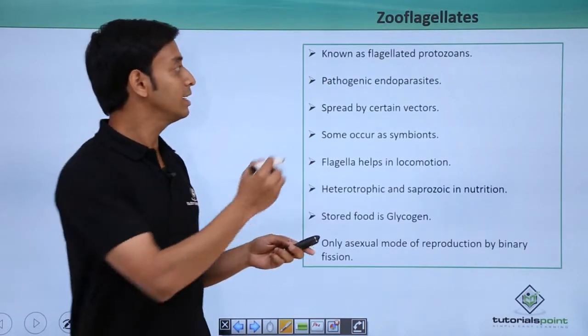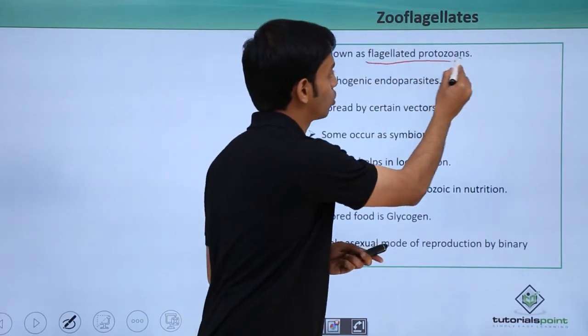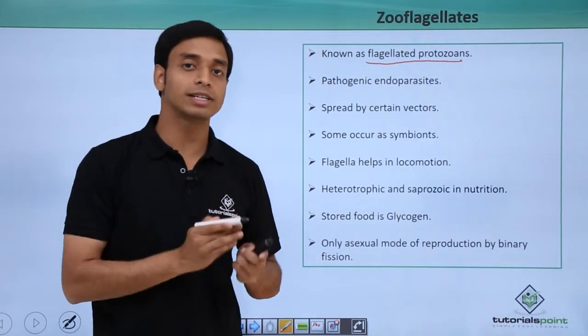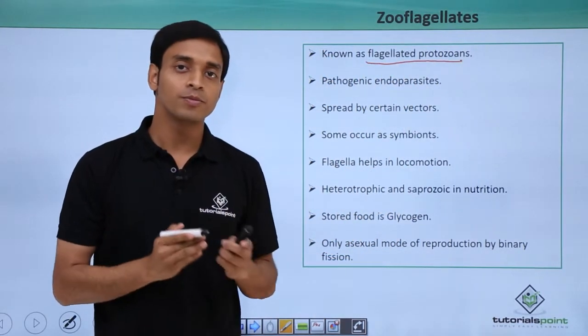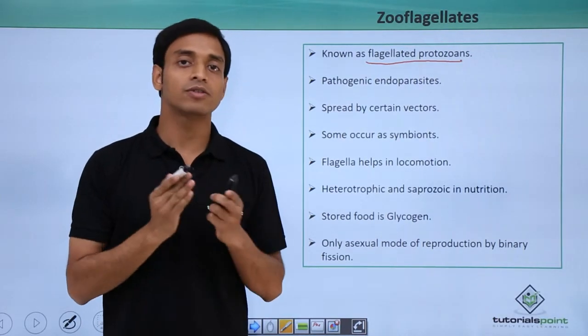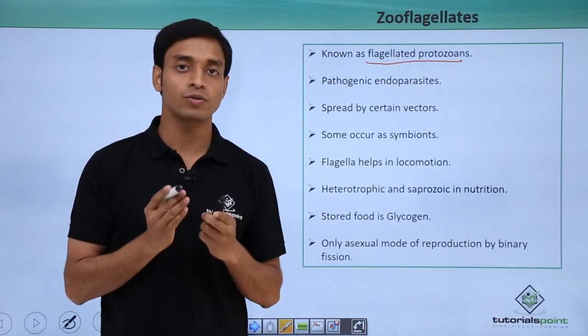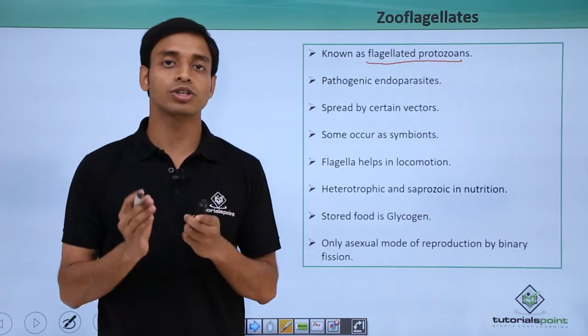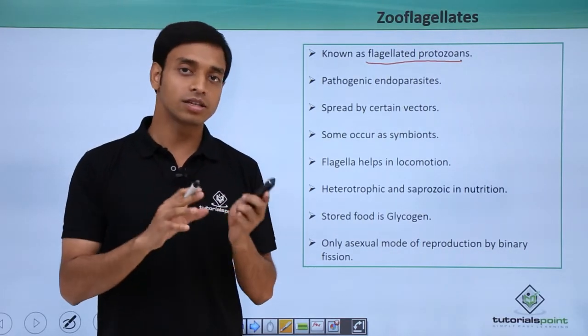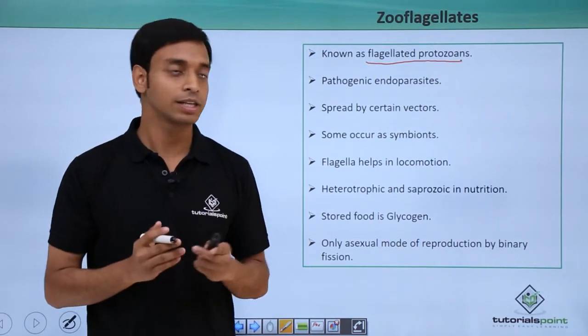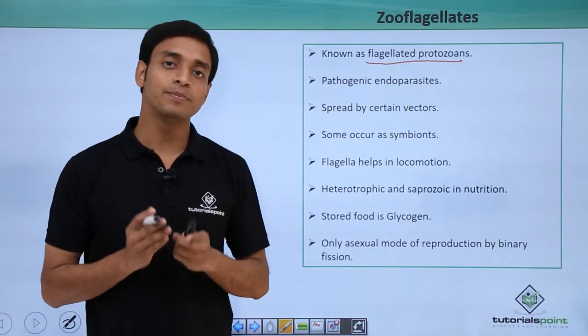These are basically termed as flagellated protozoans. Why flagellated protozoans? From the name we can understand that they have the presence of flagella, which are nothing but whip-like projections or structures on the surface of these type of cells. So they are known as flagellated protozoans.